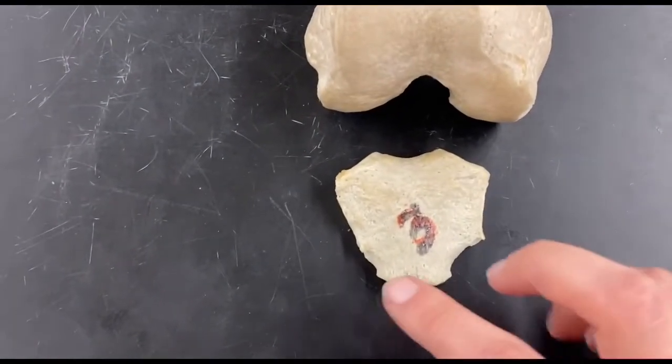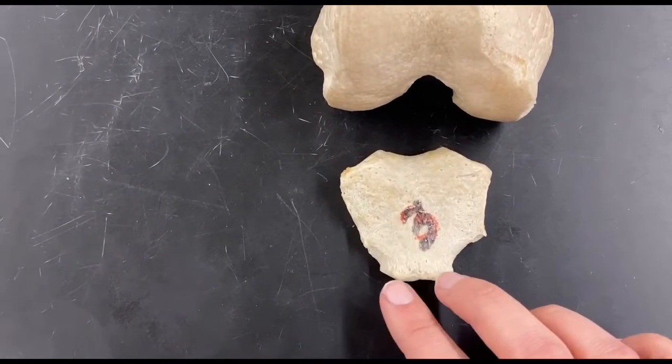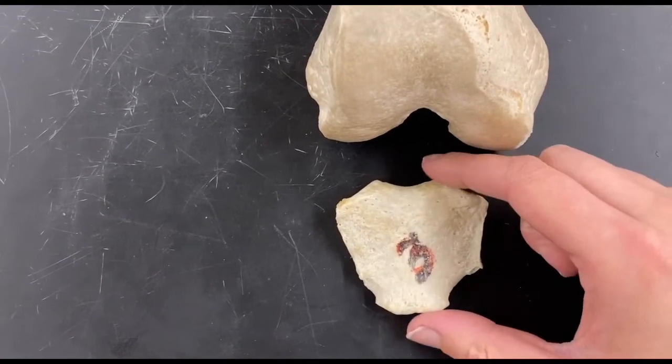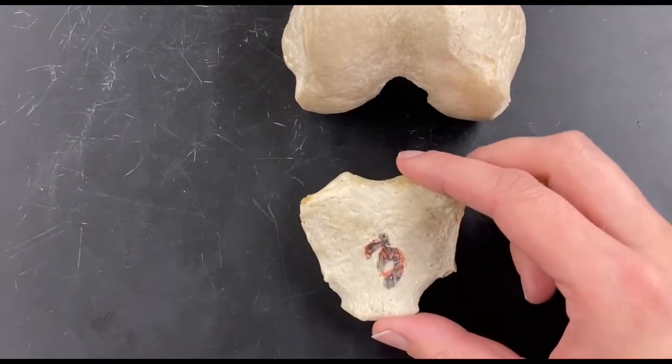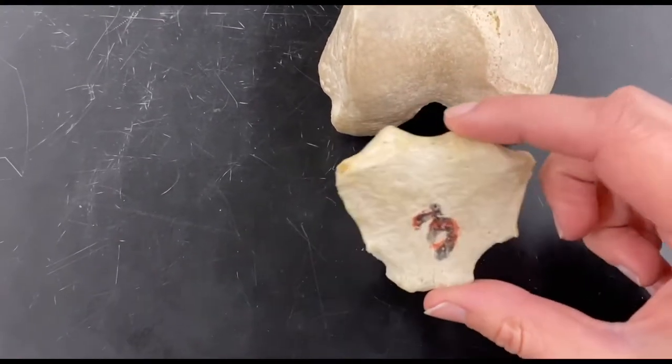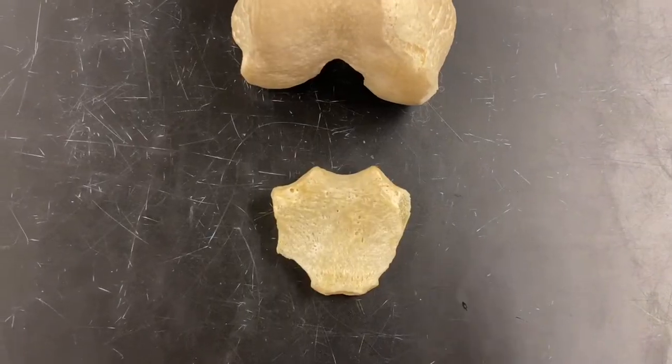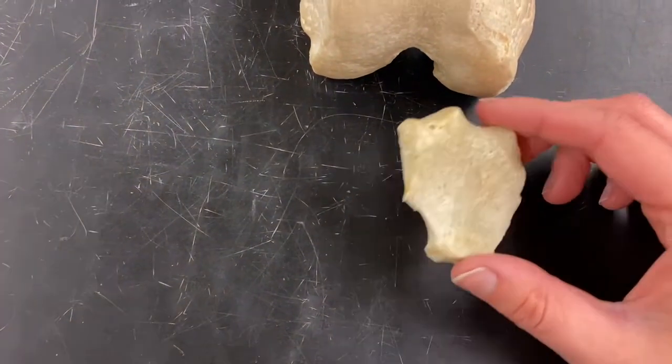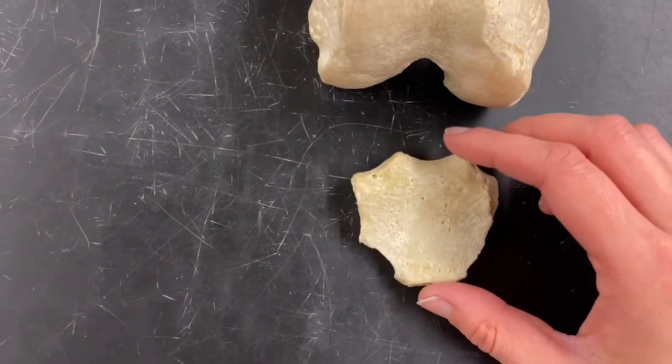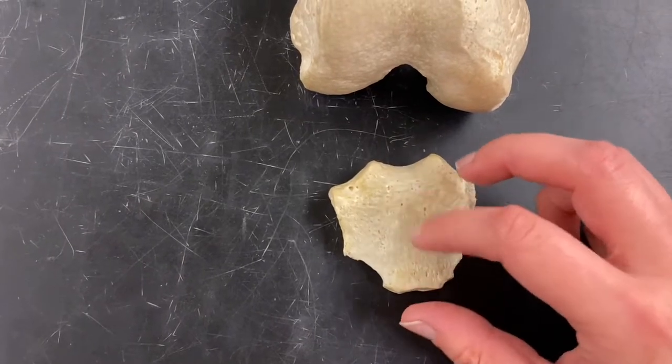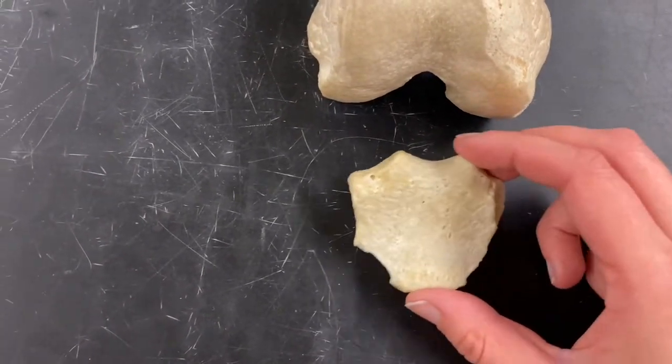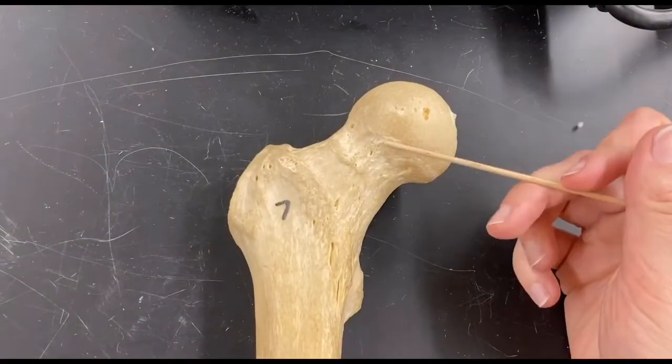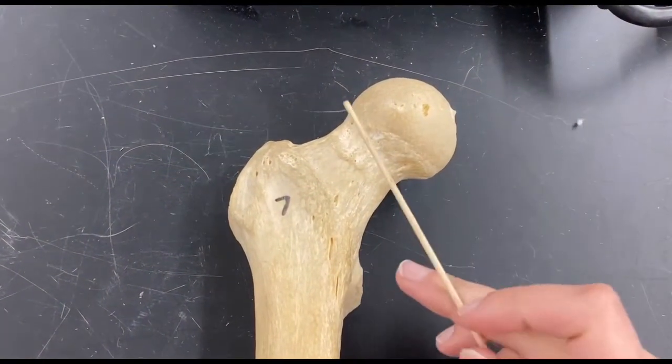And the region where it kind of narrows in to kind of a point is going to be called the apex of the patella. And note that this is a sesamoid bone and it's kind of like a triangular shape. And just to make a note for the sake of the practical, while these are the articulating surfaces of the patella, just know that you would just call them the articular surfaces.